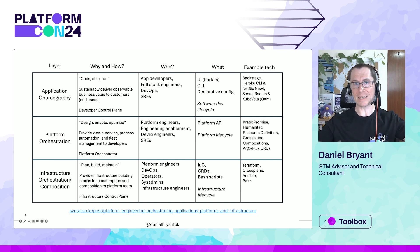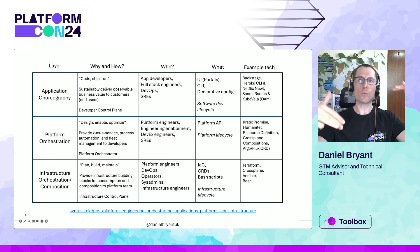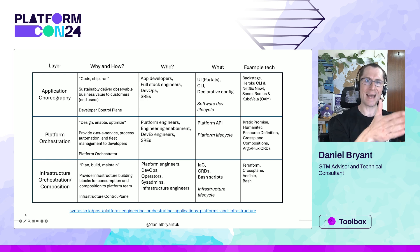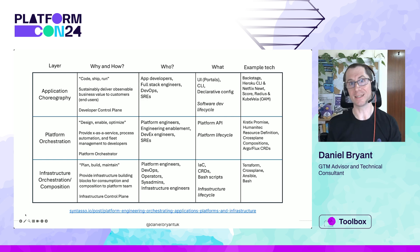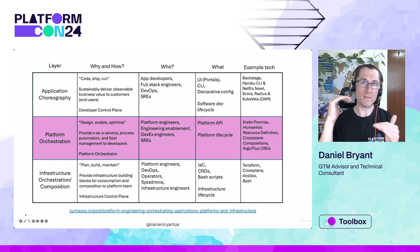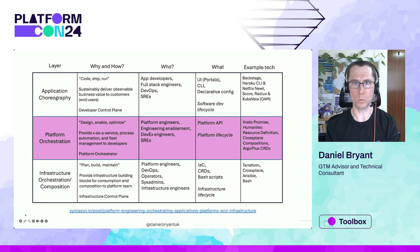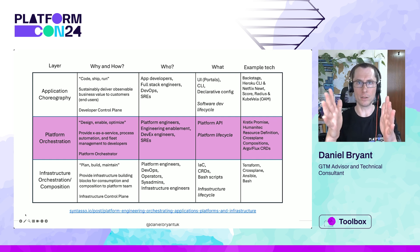This next slide is a bit of an eye chart, but I want to summarize what I'm thinking with those three layers — there's a blog link at the bottom if you want to read at your own pace. I'm covering the why, how, who, what, and example tech for each layer. Diving specifically into the platform orchestration layer: this is where you provide everything as a service, abstract and encapsulate process automation, and provide fleet management.